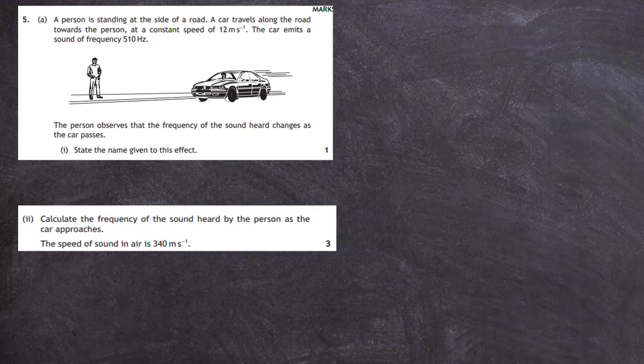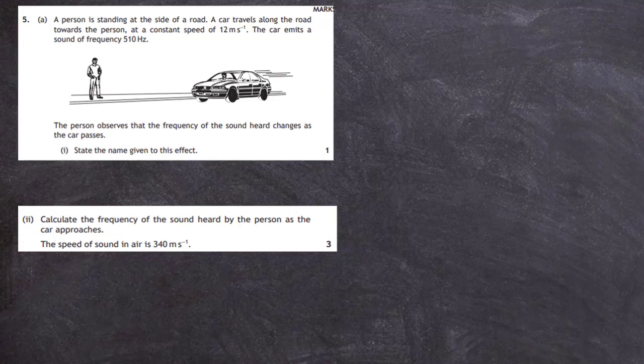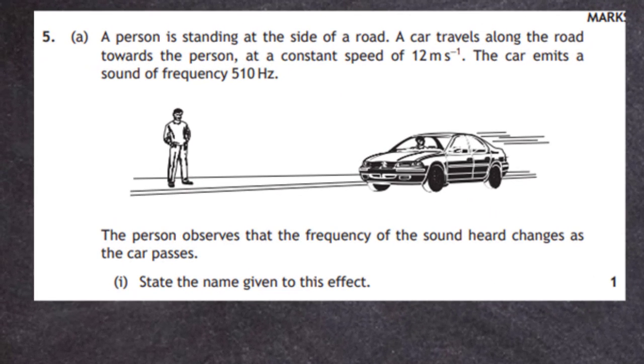Question 5A of the 2019 Higher Physics SQA exam from section 2. A person is standing at the side of a road. A car travels along the road towards the person at a constant speed of 12 meters per second. The car emits a sound of frequency 510 hertz. The person observes that the frequency of the sound heard changes as the car passes by.